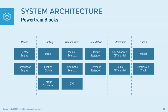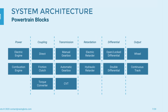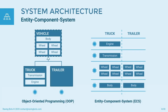The powertrain model includes many blocks that serve different functions. Each block has a range of configuration parameters which define its behavior, and a set of internal state variables which are updated in each simulation step. The blocks can be freely connected to match the powertrain of a real vehicle. At the moment they let you build a car, a truck or even a tank. Now that you understand the idea of the powertrain blocks, we can focus on their implementation.